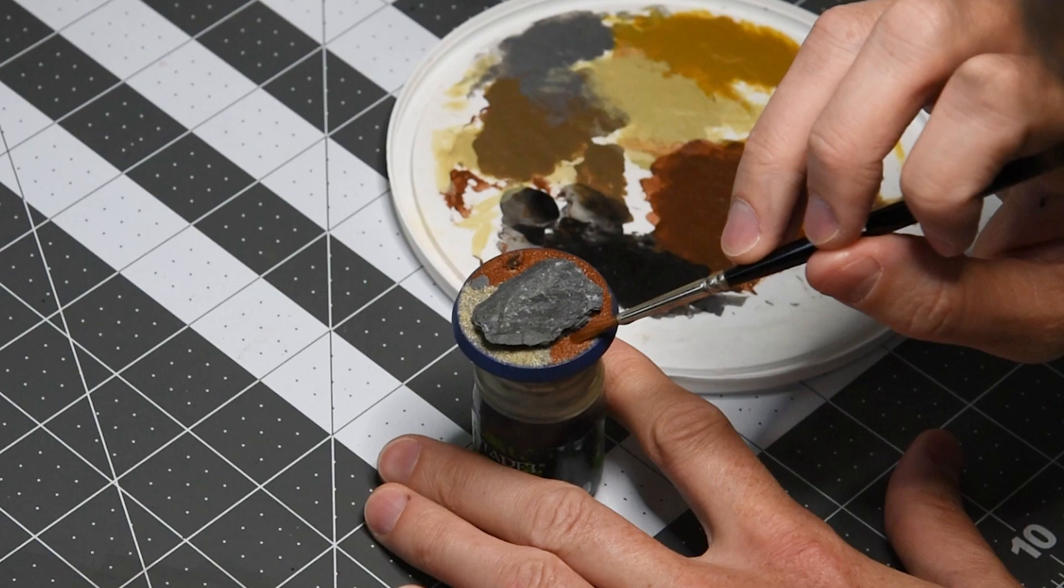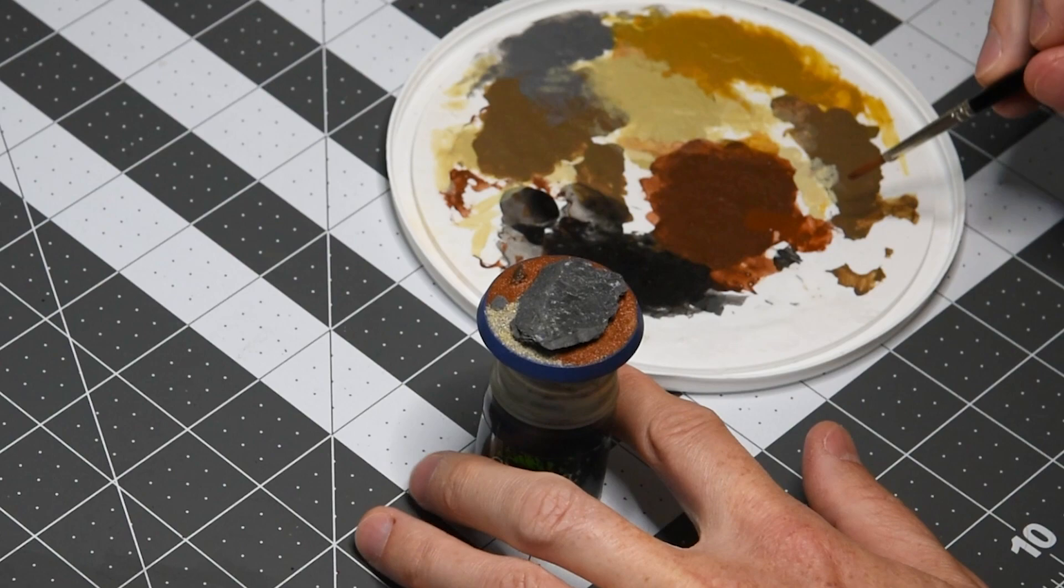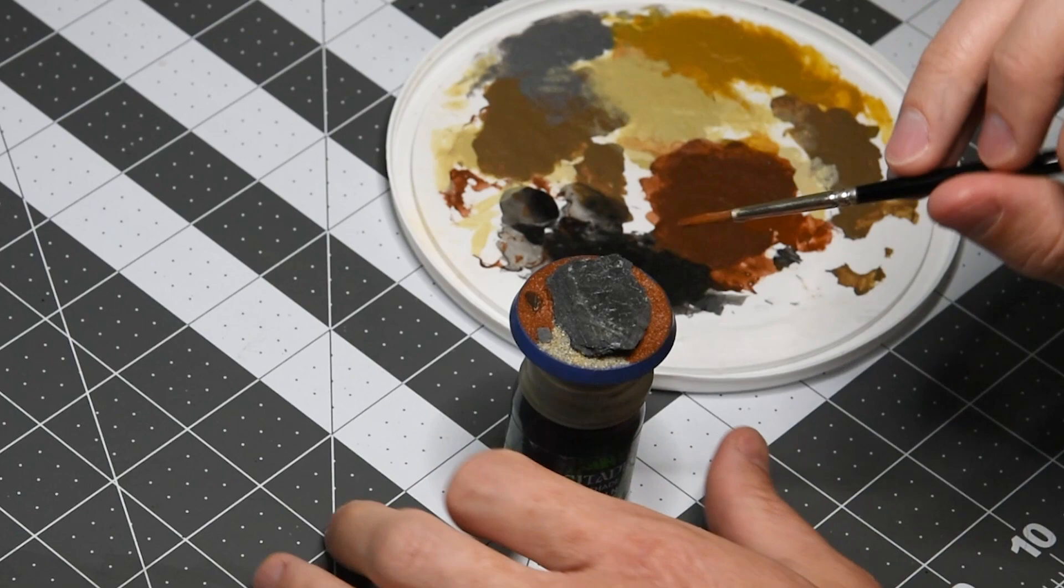Otherwise we're doing more of a dry brushing or over brushing technique and really I just want to saturate it with paint. This color is Mournfang Brown and I'll include a list of all the paints in the description so you guys can use it for your own reference if you're trying to achieve the specific box art and heavy metal look.